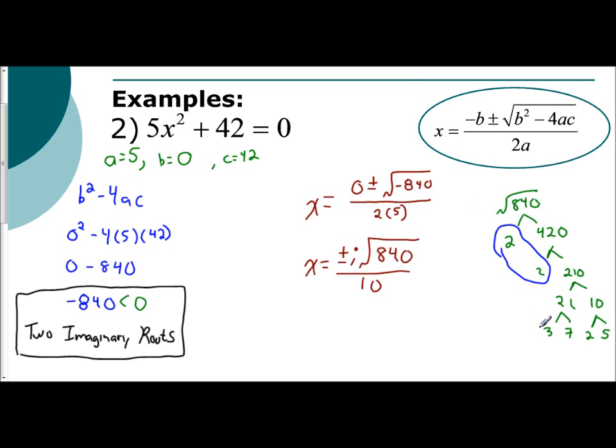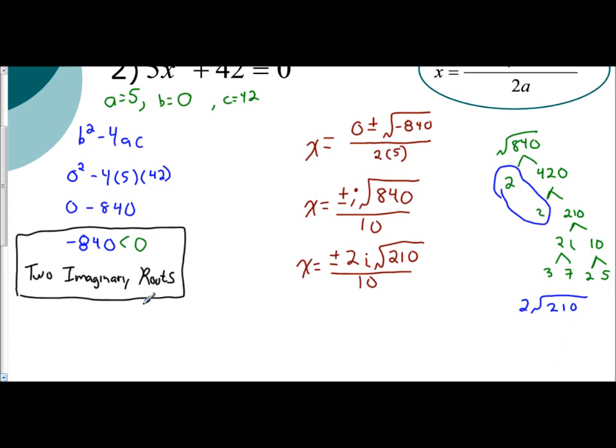So 840. If you take the square root of it, simplifies into 2. With 3 times 7 times 2 times 5, which is 210. Still remaining. So if I take that, I get x equals plus or minus 2i square root of 210 over 10. We can still simplify. You treat the 2 like a coefficient here. So if you have 2 tenths, you really have 1 fifth. And so I have x equals plus or minus i square root of 210 over 5. You see, I have two imaginary answers. One positive i square root of 210 over 5 and one negative i square root of 210 over 5.